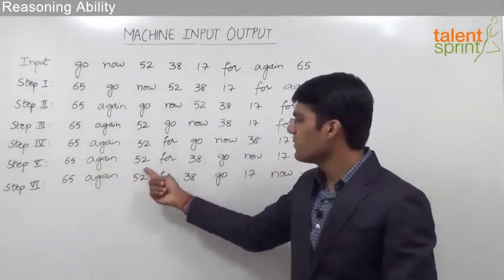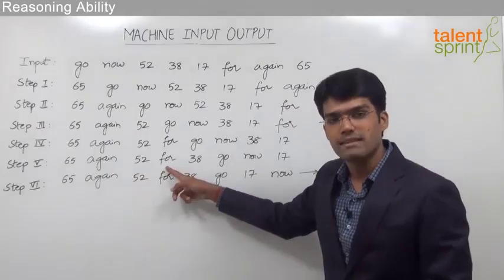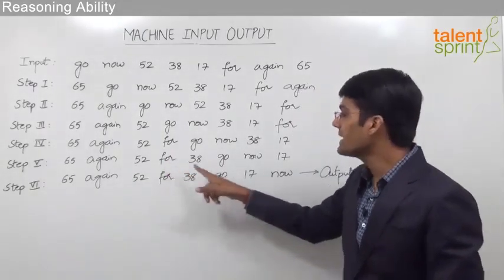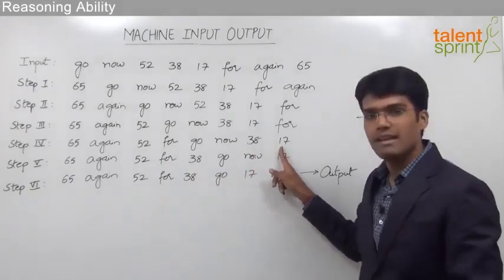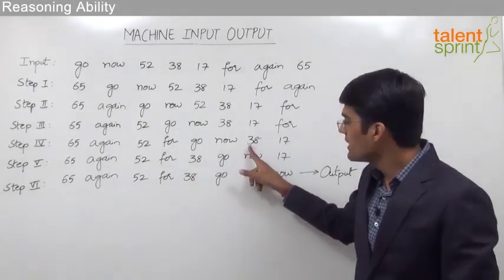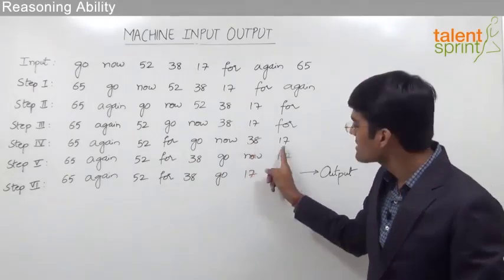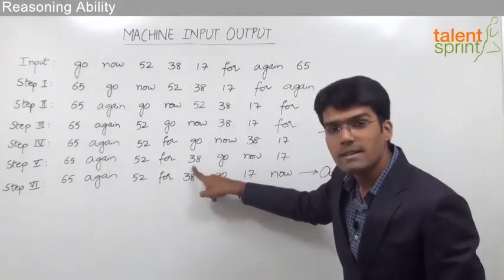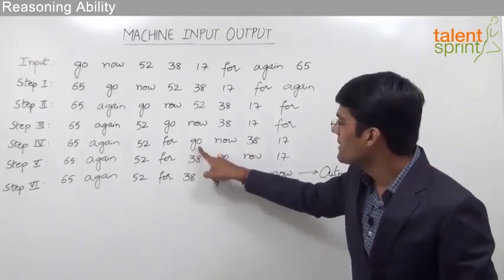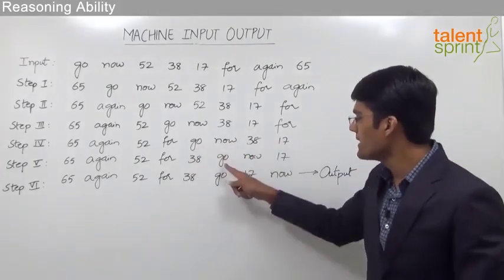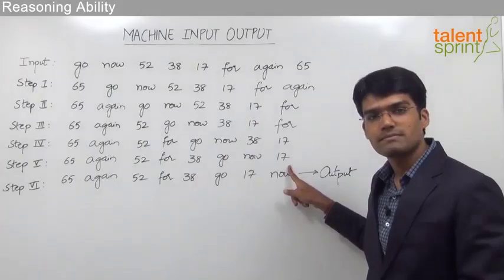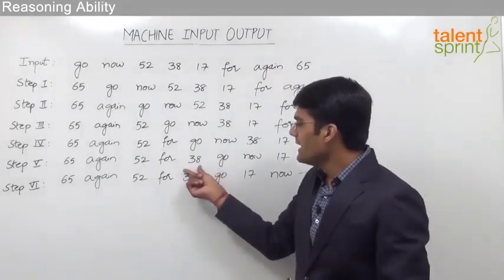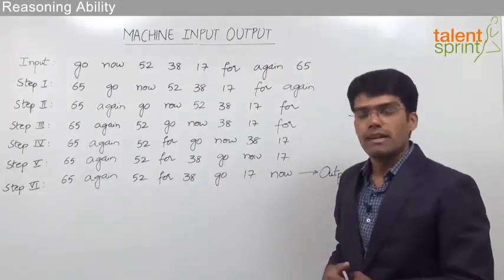In step 5, the first four elements are already in their correct places. After 'for' we need a number, and that number should be 38 as it is the higher of the remaining numbers. So 38 is brought from the second-to-last position in step 4 to the fifth position in step 5, and the remaining elements — go, now, and 17 — are pushed aside.